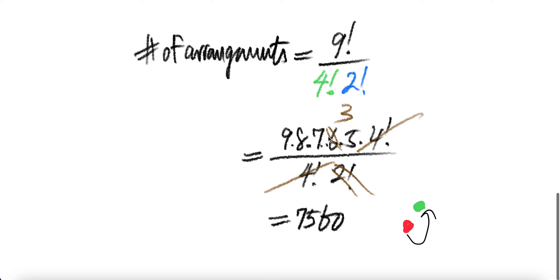Nine factorial is 9×8×7×6×5×4!. Stop at four factorial. Four factorial is here, two factorial. Four factorial cancels, and then two factorial is two. Two cancels with six to give three. Multiply that out, you get 7560 ways of arrangement. Done.